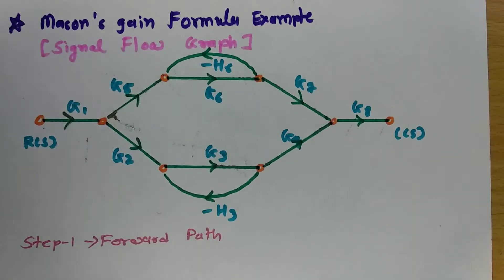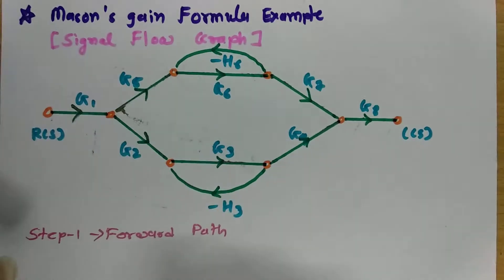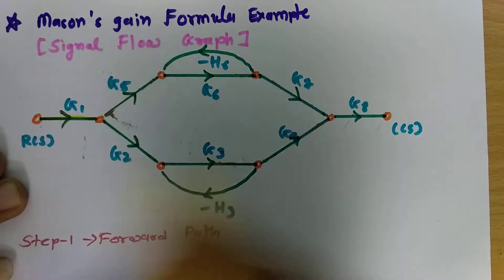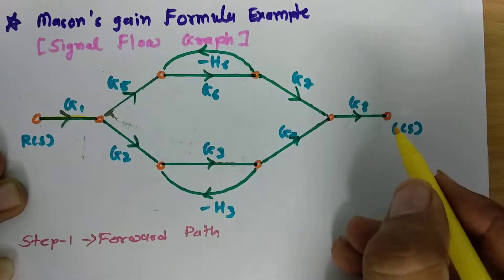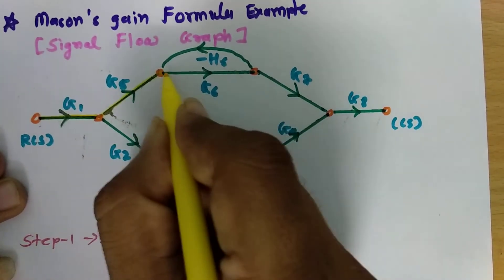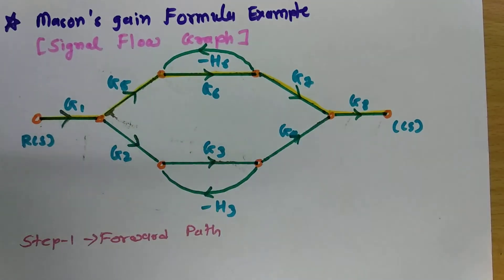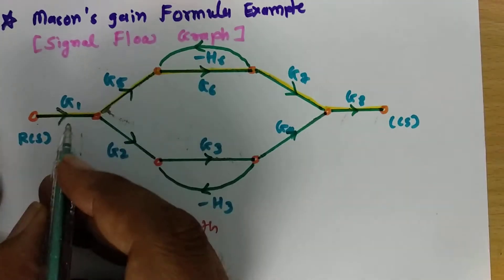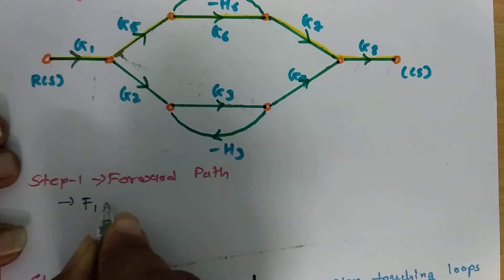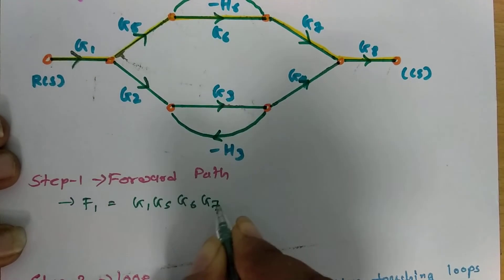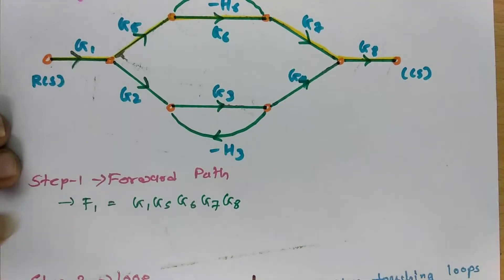The first part of solving this signal flow graph is to find the forward paths. If we see the signal flow graph, one forward path going from input to output — from R(s) to C(s) — is the path I am tracing right now. This first forward path F1 equals G1 · G5 · G6 · G7 · G8.